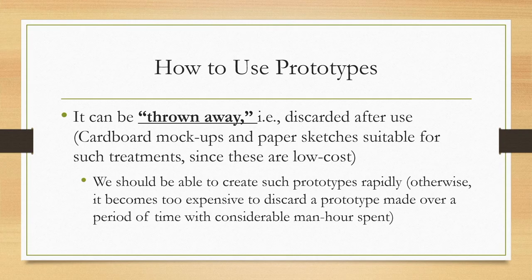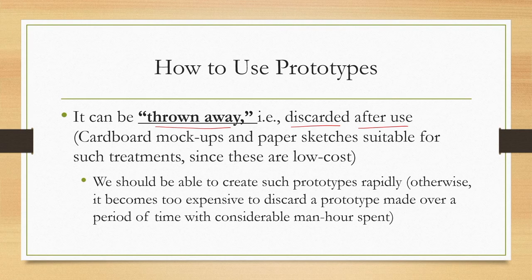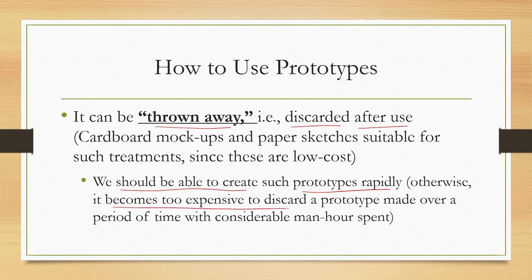We have learned about different ways to categorize prototypes. Another important issue is how to use the prototypes. There are broadly three ways. First, it can be thrown away — the prototype is discarded after use. For example, if we are creating cardboard, paper, wooden, or clay mockups, or sketches drawn on paper, we need to throw them out. This is not a problem because they are low cost and take very little effort to create. The idea is that we should be able to create such prototypes rapidly and cheaply.